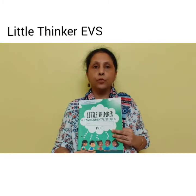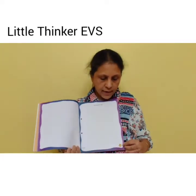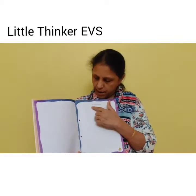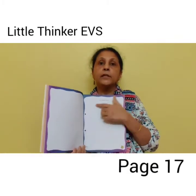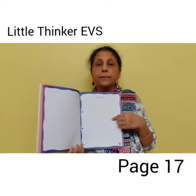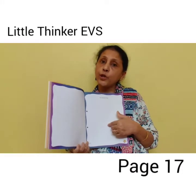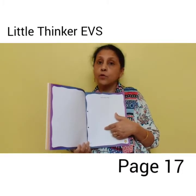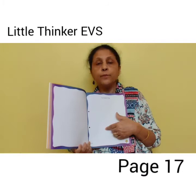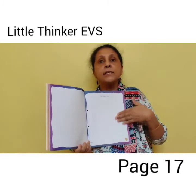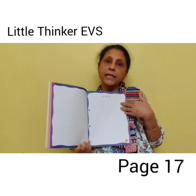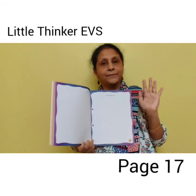Now, it's time for home fun activity. This is your little thinker EBS book. Open page number 17. My scrapbook. Children, here you are going to paste the pictures of different animals that you are going to find from old newspapers, old magazines, or your old books. Cut them and paste them on this page. This is your activity. Enjoy it. Bye bye!